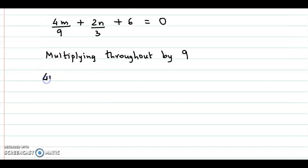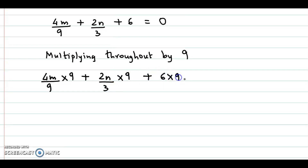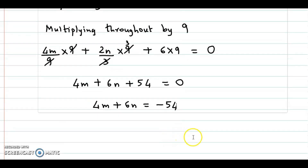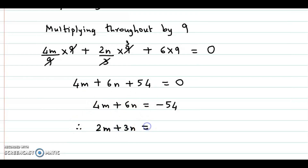Multiplying throughout by 9: 4m upon 9 times 9 plus 2n upon 3 times 9 plus 6 times 9 equals 0. The 9 cancels, giving 4m plus 6n plus 54 equal to 0. So we have 4m plus 6n equal to minus 54. Dividing throughout by 2, we get 2m plus 3n equal to minus 27. Let us name this equation number 1.